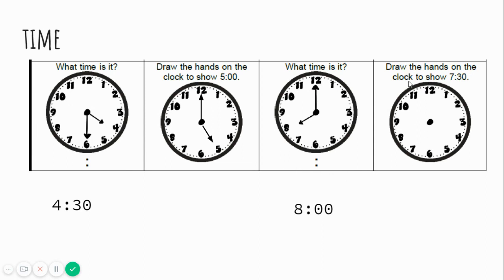Draw the hands on the clock to show seven thirty. Hmm. My hour is seven. So it needs to be somewhere by this seven. My minute is thirty. So I know that this is thirty. Let's see. Good. It's right there in between that seven and that eight. And then our minute hand is on six. So let's make sure. Five, ten, fifteen, twenty, twenty-five, thirty. We have seven thirty on the clock.